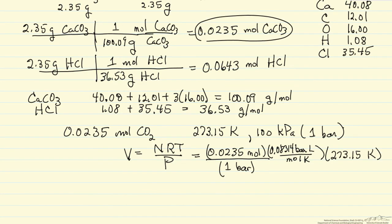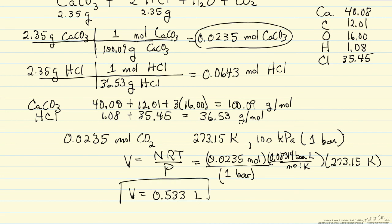So I've substituted in the values where I've looked up the gas constant in liter, bar, moles, and Kelvin. Notice I've used bar, it just makes my calculation a little easier. And so I can solve for the number of liters of carbon dioxide from this reaction. And so I've solved now the number of liters of carbon dioxide that form and react at 2.35 grams of calcium carbonate and 2.35 grams of HCl.